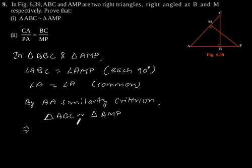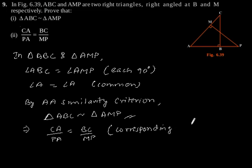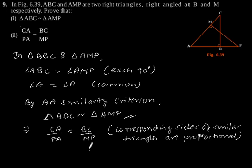This also implies CA by PA is equal to BC by MP, since corresponding sides of similar triangles are proportional. Hence proved.